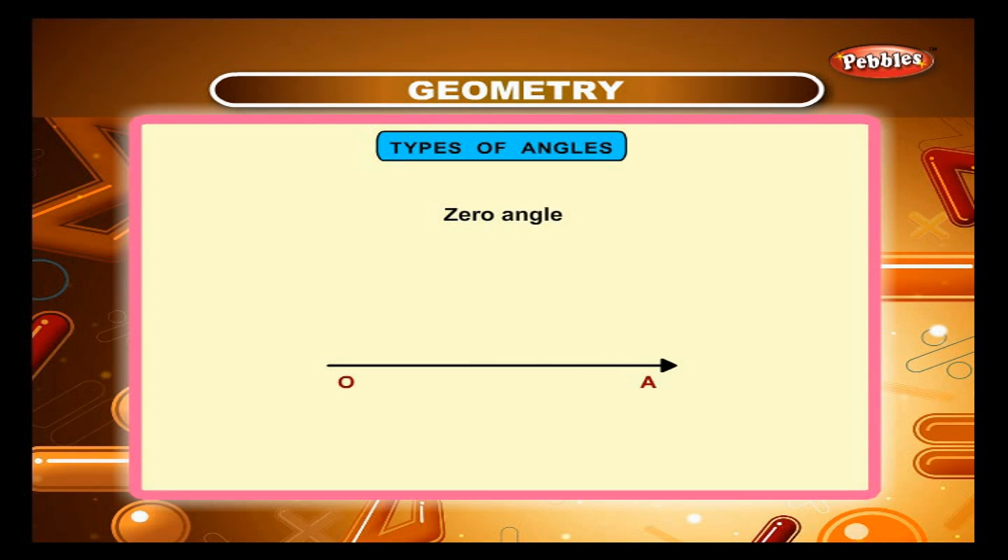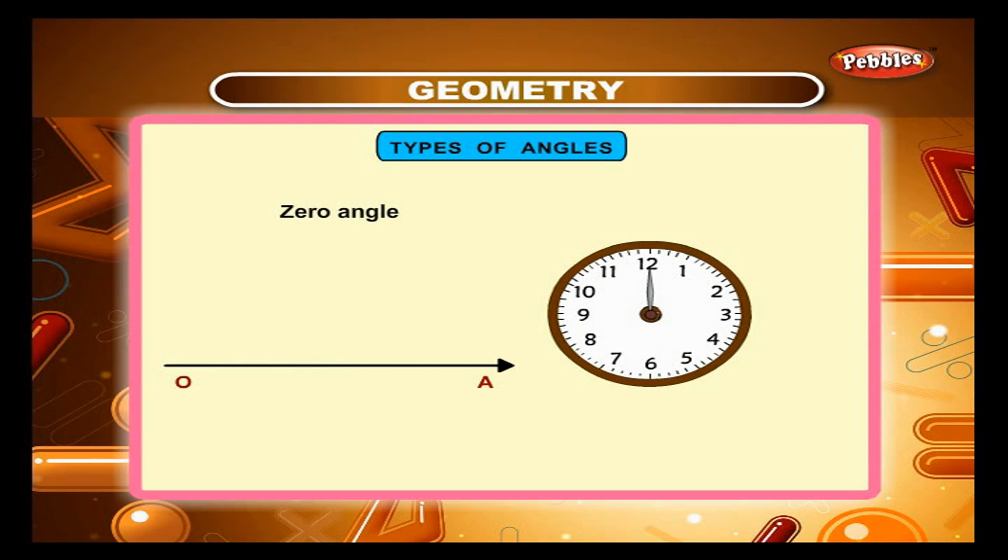An angle measuring 0 degree is called a 0 angle. The hands of a clock make a 0 angle at 12 o'clock.